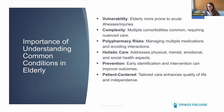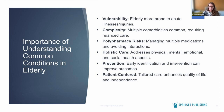Offering holistic care — addressing the physical, mental, emotional, and social health aspects — is really important. Prevention is always better. This is something we saw in neurosurgery: preventing brain injury is way more effective than any treatment we have. There's nothing that's going to bring you back to a hundred percent of what you were, so preventing the injury from happening in the first place should be the priority in every specialty. Having patient-centered, tailored care enhances the quality of life and independence.